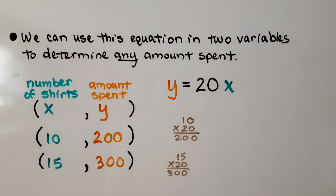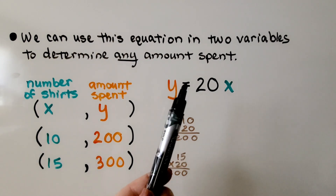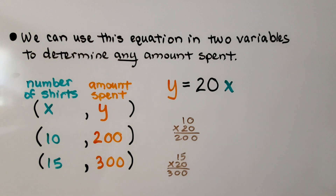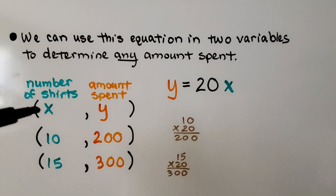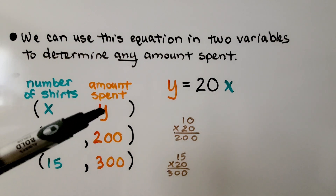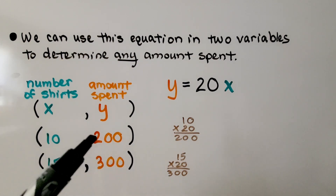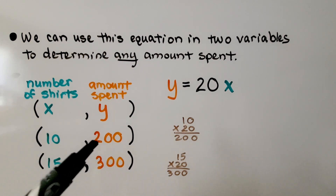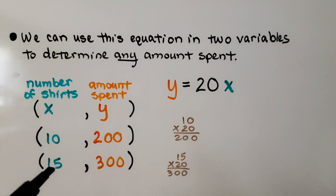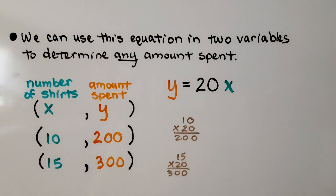We can use this equation in two variables to determine any amount spent. Using y = 20x, x is the number of shirts and y is the amount spent. If he buys 10 shirts, 10 times 20 is 200, so the amount spent is $200. And if he buys 15 shirts, 15 times 20 is 300, so he spent $300.